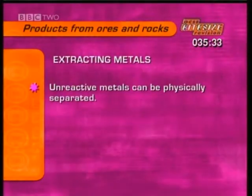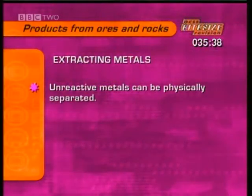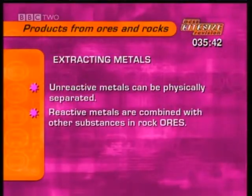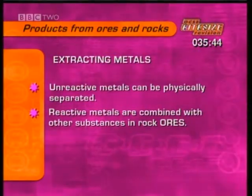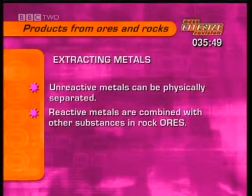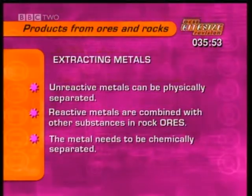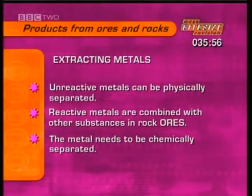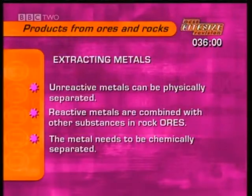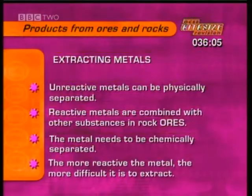Unreactive metals like gold and silver are found as small particles of the pure metal and can be physically separated from other substances. Most metals are too reactive to be found in their pure form — they exist in the earth's crust combined with other substances as rock ores. Ores are often metal oxides, or compounds that can be changed to oxides, from which the metal needs to be chemically separated and purified. The more reactive the metal, the more difficult it is to extract.